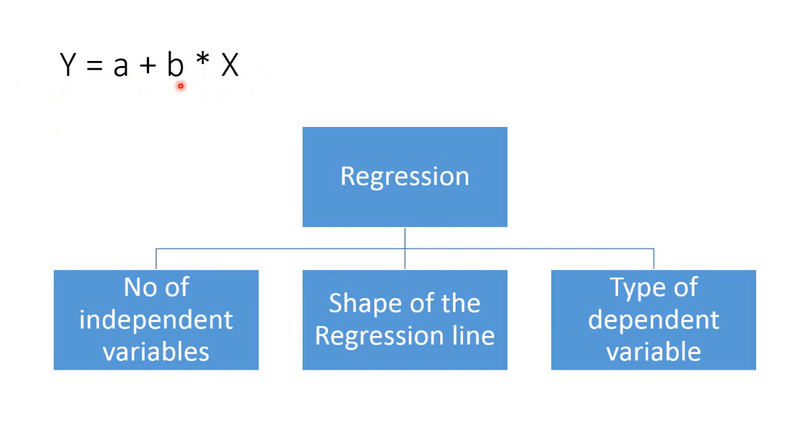a and b are known as the parameter estimates. Regression is classified into various types based on the nature of the regression equation.